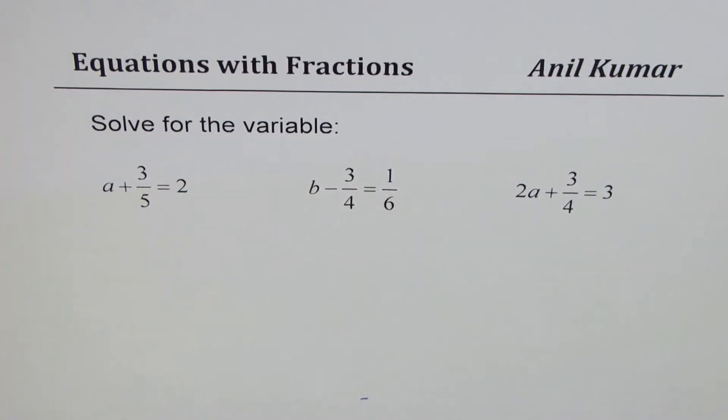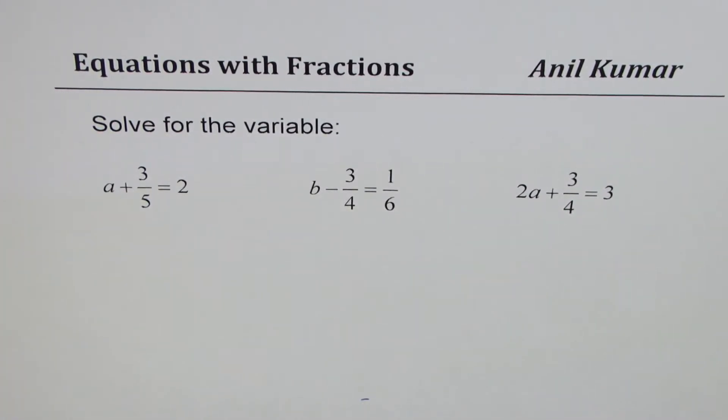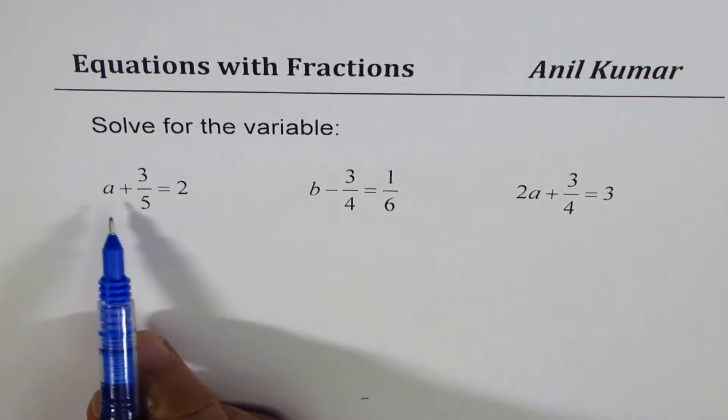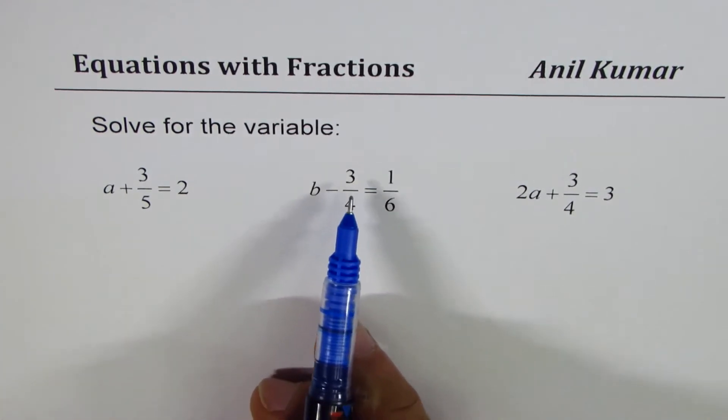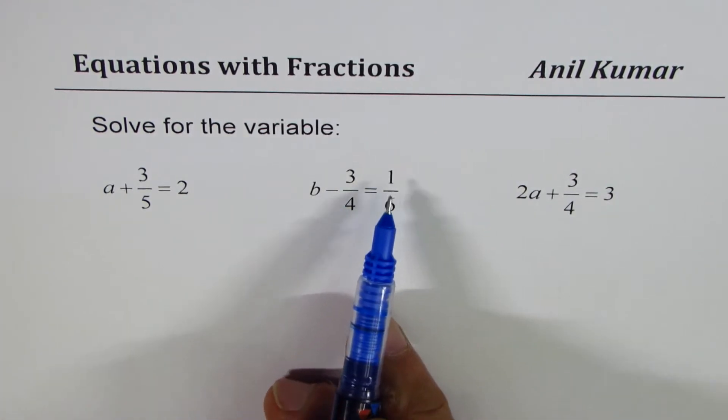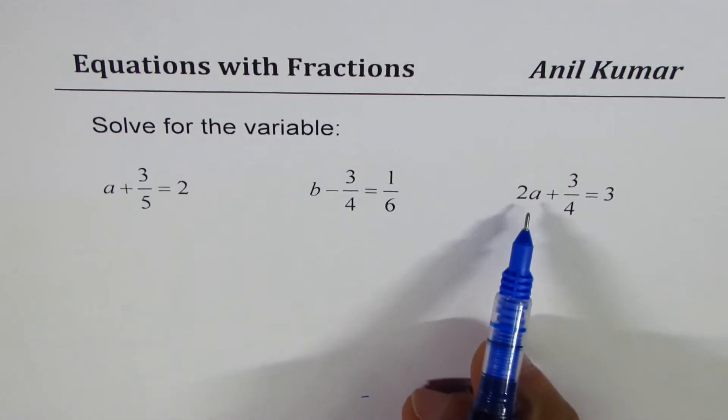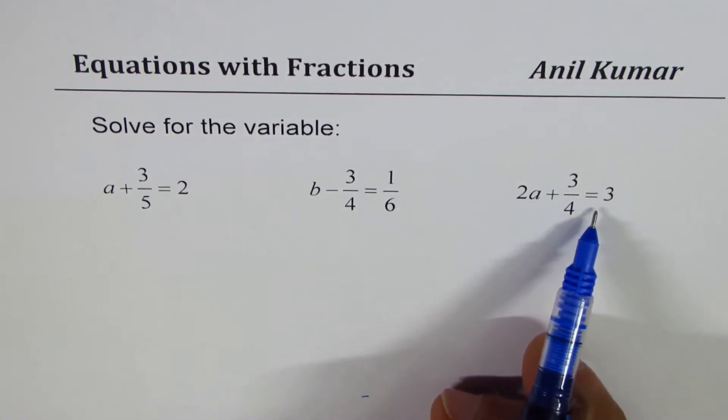I'm Anil Kumar, sharing with you solutions of equations which involve fractions. The three equations here are a plus 3 over 5 equals 2, b minus 3 over 4 equals 1 over 6, and 2a plus 3 over 4 is equal to 3.